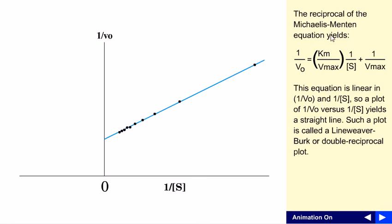If we make a reciprocal for that equation, we can get 1 over V0 equals Km by Vmax times 1 over S plus 1 by Vmax.